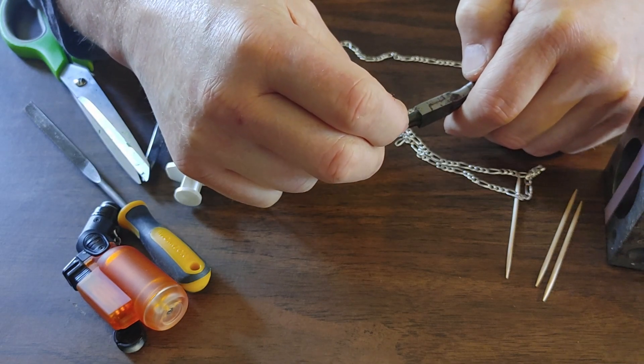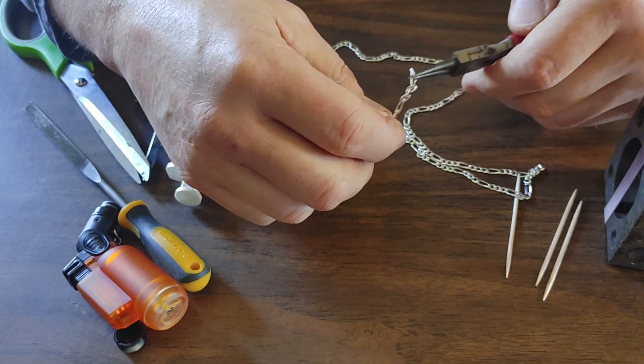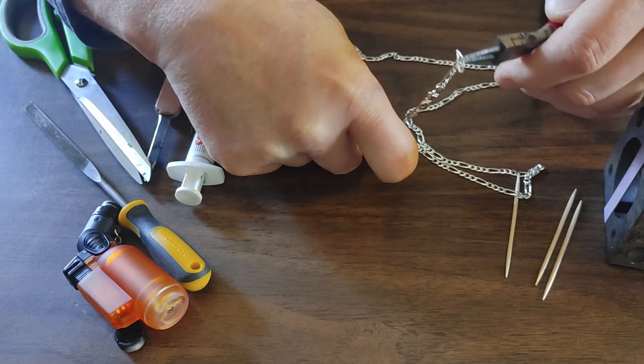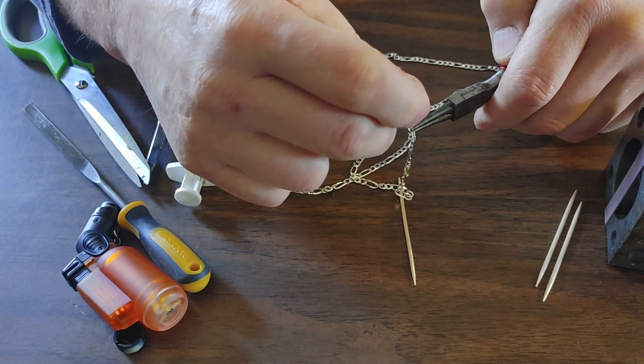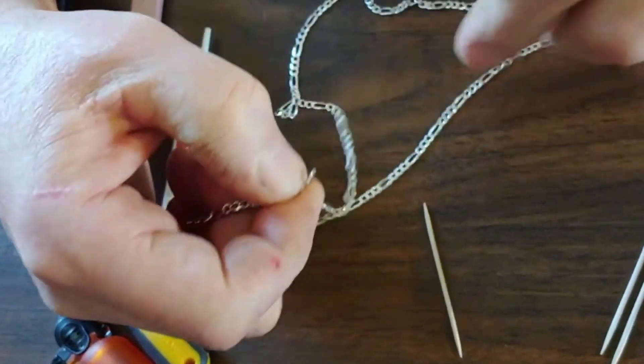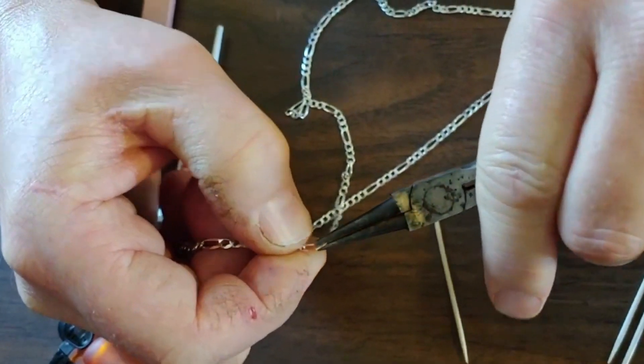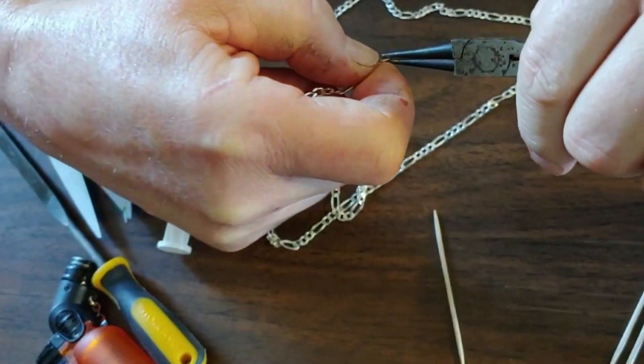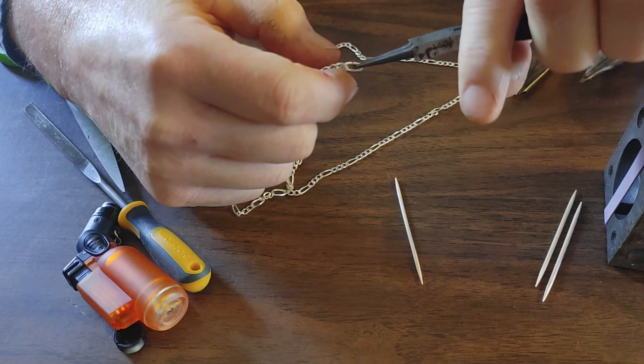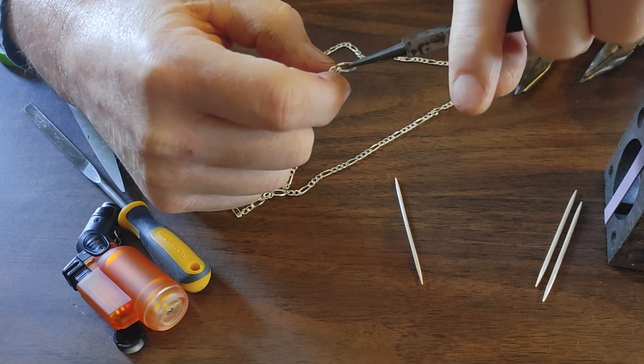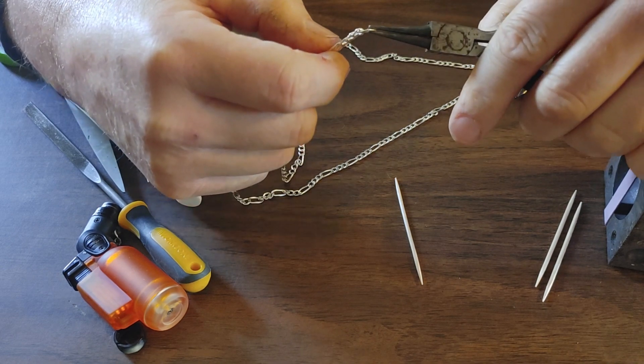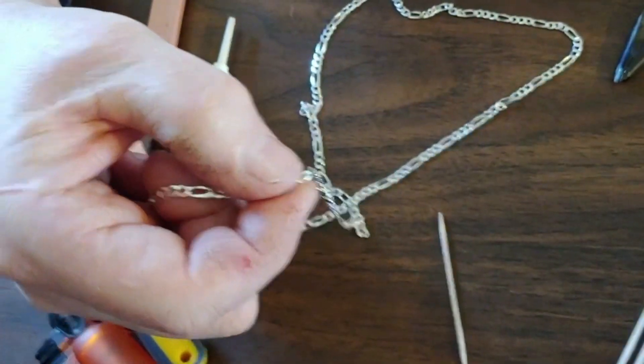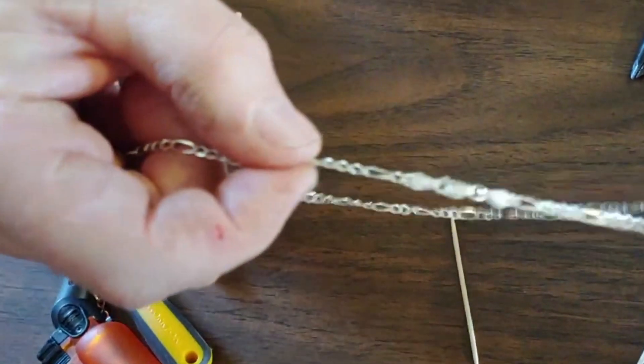Step one: unite both sides of the chain using an open link. Charles is using a small pair of jewelers pliers here, but you can also use tweezers. Once both sides are united, bend the link back into shape. Close the link by bringing both ends into contact with each other. Take your time to line up the ends. This will serve as a support structure for your repair.